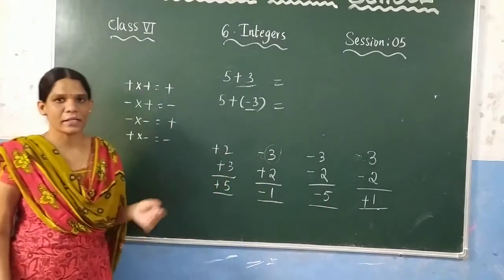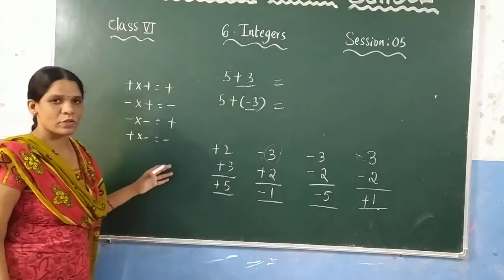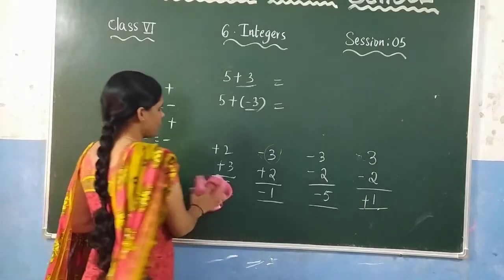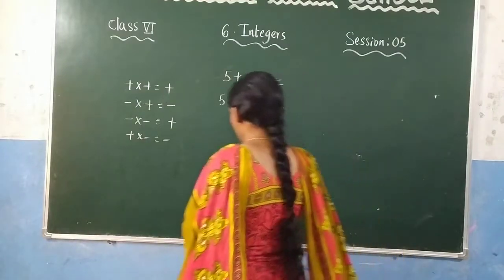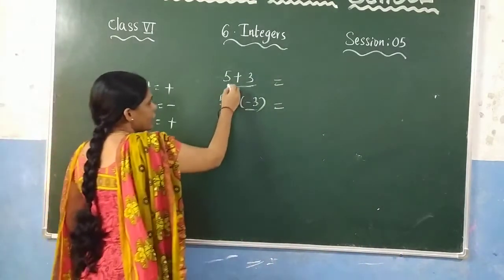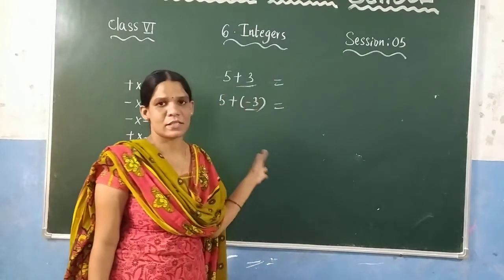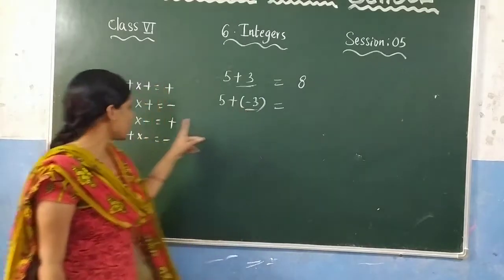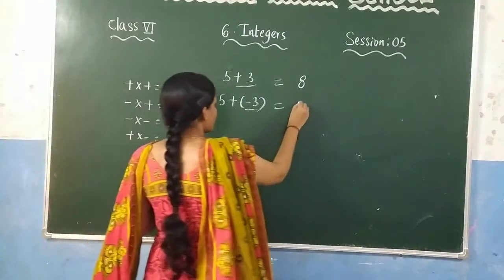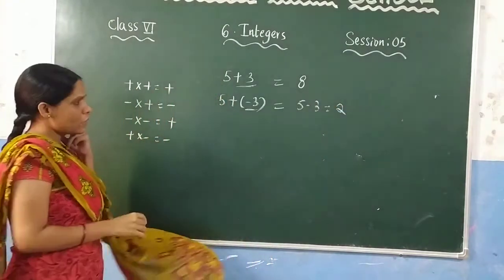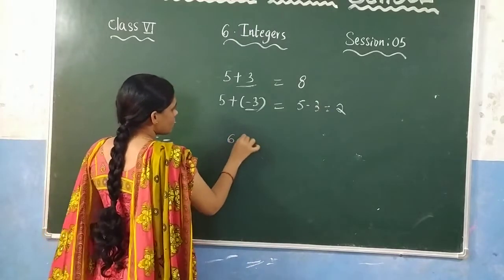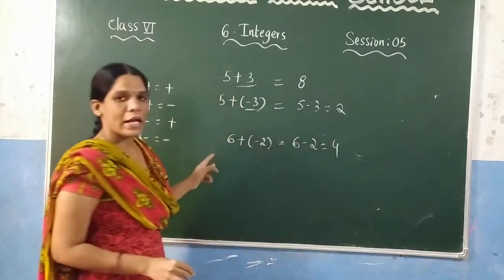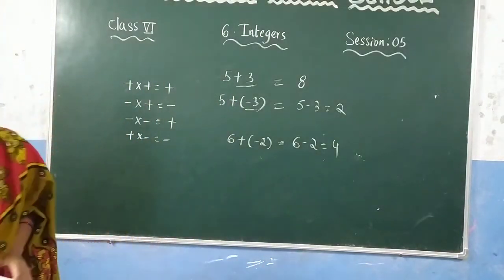If you know and follow these rules, you can solve any addition of integers without using the number line. For example: 5 plus 3 — both are positive, so add: 5 plus 3 equals 8. For 5 plus negative 3 — plus into minus gives minus, so subtract: 5 minus 3 equals 2. Another example: 6 plus negative 2 — same rule, subtract: 6 minus 2 equals 4.